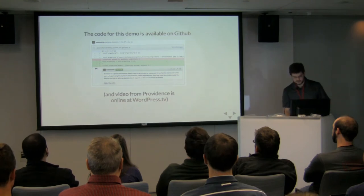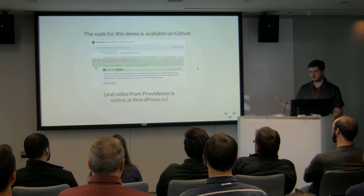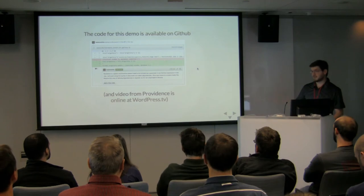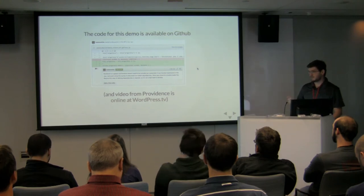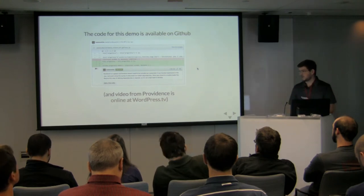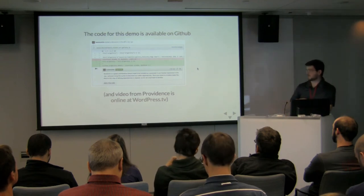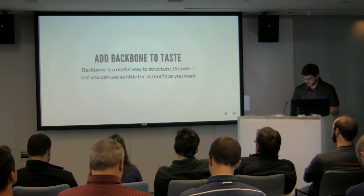The actual application code, now that we've built those structures, is very small. We're defining one model and using that model across three different views, all of which communicate through eventing. This is about as separated as this can possibly get — if you need to work on any individual part, you know exactly where to go and the relationships between the data and the views are clear. All of the code for this is up on GitHub. If you're curious, it goes through step-by-step what we just talked about. There's also a video from a previous version of this talk up on WordPress.tv.